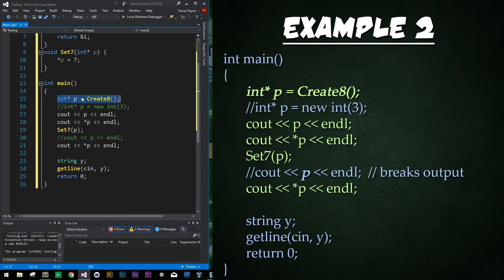So next we have our pointer initially being set to a value of create 8 which is just creating 8 that's no longer in memory. Then we're going to go ahead and output the address, output the value, and then we're going to use the set 7p to set the value of p to 7 and then we're going to output this. All right and let's see what we get.